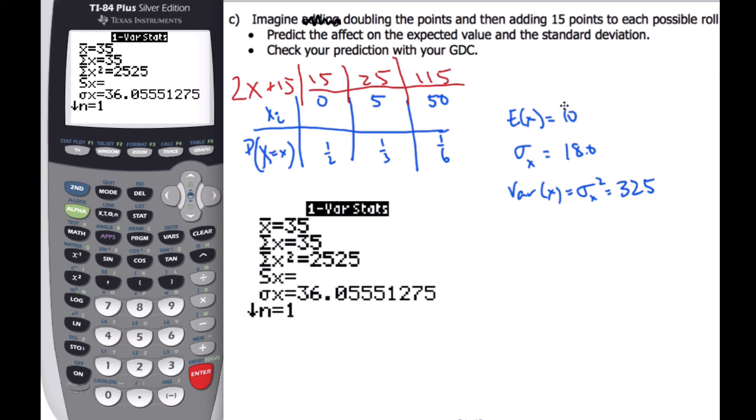Well, if I take 10, multiply it by 2 and add 15, I get 35. So expected value seems to take on the characteristics of the transformation, it doubles and adds 15, because it's moving the value around.